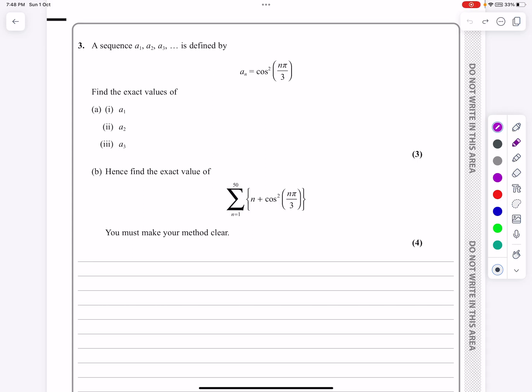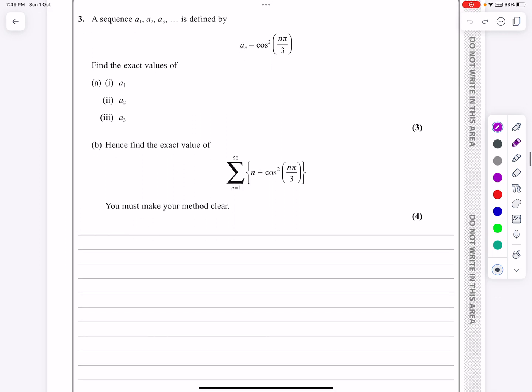Okay, this is the P2 paper from October 2022. It's question number three, and this is a sequences and series question. You can see we've got some sigma notation on it. There's going to be some arithmetic series later on, but let's make a start. And these questions are often quite interesting. The examiners have got some imagination when they're doing these questions.